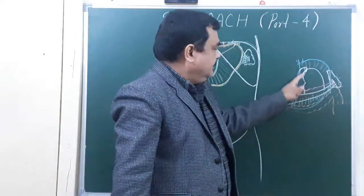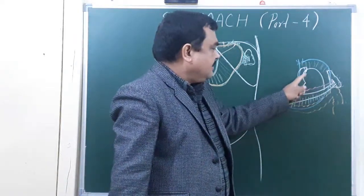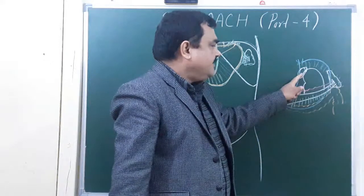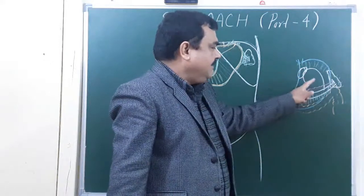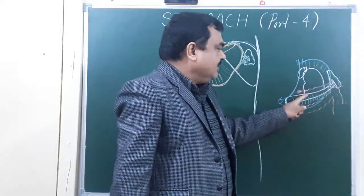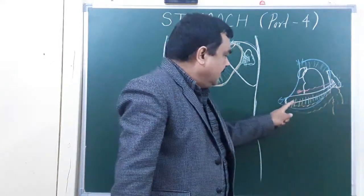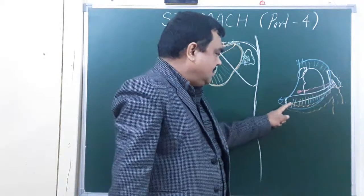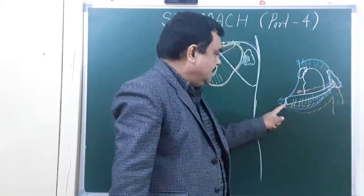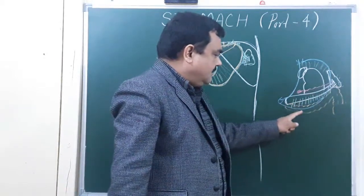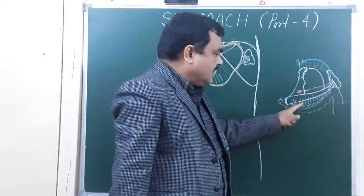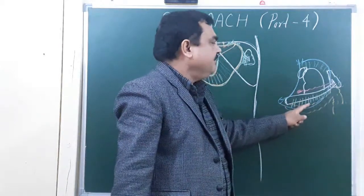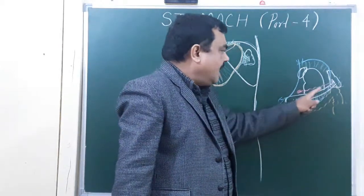The structures forming the stomach bed are: left suprarenal, left kidney, splenic artery, and pancreas. Here is transverse colon, transverse mesocolon, and the entry of the transverse colon.